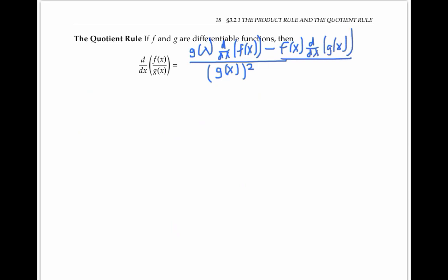The way I remember this is this chant. If you think of f(x) as the high function and g(x) as the low function, you can say this is low d high minus high d low over low low, where low low means the low function squared.